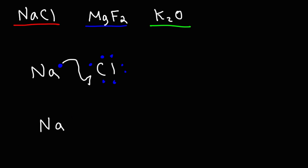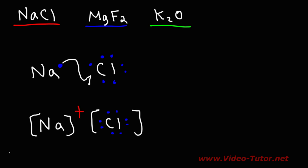The way we're going to write this is we're going to use brackets when writing the Lewis structure for these ionic compounds. Chlorine now has eight valence electrons — four lone pairs. We're going to put this inside a bracket and put the negative charge outside of the bracket. So that's how we draw the Lewis structure of sodium chloride.